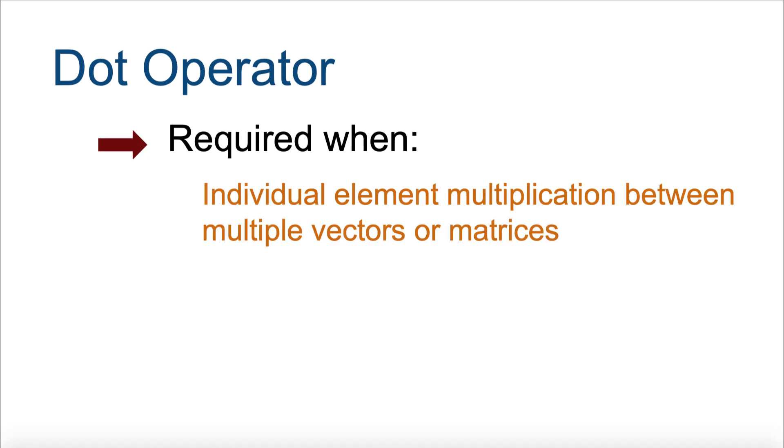But, for individual element multiplication between multiple vectors or matrices, or individual element division by at least one vector or matrix, the dot operator is required.